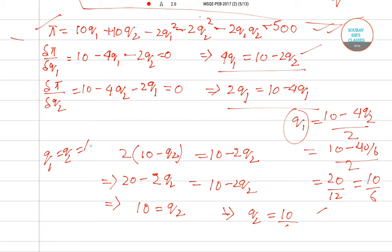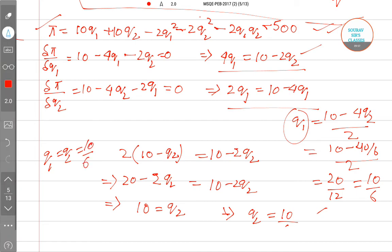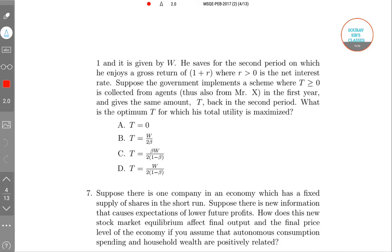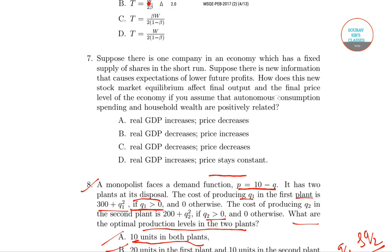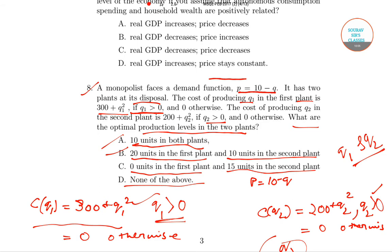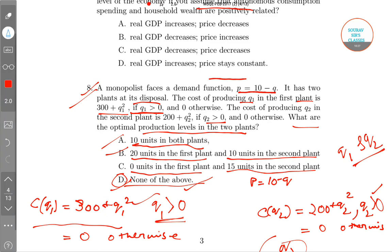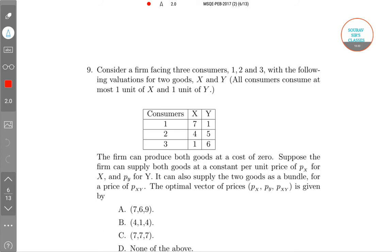We have found q1 equals q2 equals 10/6. Looking at the options in question number 8, none of the given options states that q1 and q2 are 10/6. Therefore, we conclude that option D — none of the above — is the correct answer for question number 8 from MSQE PEB 2017.